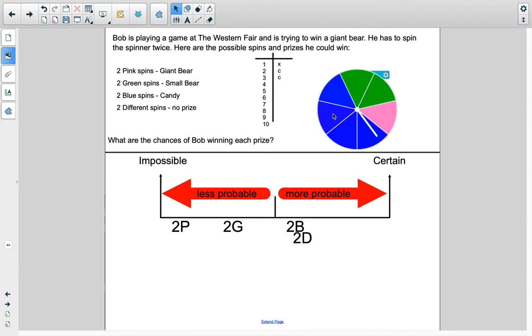One. Green. Two. Blue. So that's no prize. One. Two. No prize again. One. Two. No prize again. He's in a bad streak here, Bob is.